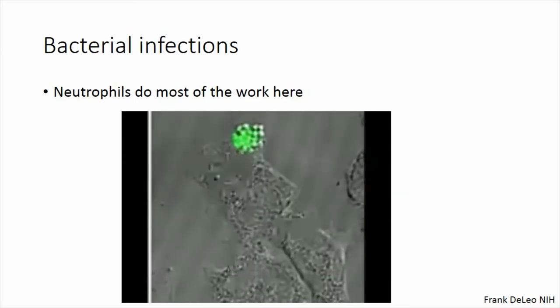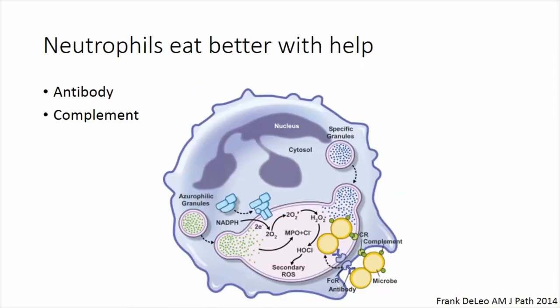Neutrophils are the power lifters when it comes to bacterial infections. It turns out that neutrophils function better with antibody and complement. It's the neutrophil that's actually doing the killing, but they're much better at it if you have enough antibody. If bacteria are coated with complement or antibody, it makes the neutrophil more able to reach around and eat it. That reaching is the part facilitated by antibody and complement.